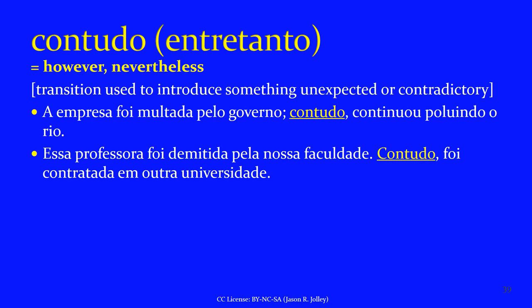CONTUDO or ENTRETANTO are transition words meaning 'however' or 'nevertheless' — a little more formal. They introduce something unexpected or contradictory. 'A empresa foi multada pelo governo. Contudo, continuou poluindo o rio' — the company was fined by the government; nevertheless, it continued polluting the river. 'Essa professora foi demitida pela nossa faculdade. Contudo, foi contratada em uma outra universidade' — that professor was fired from our college; however, she was hired by another university.